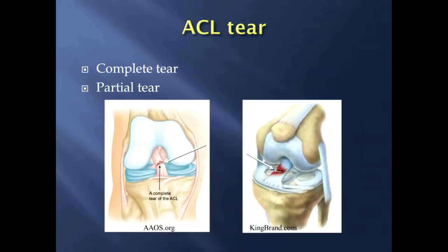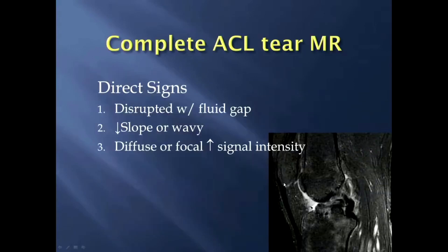The most common injury to occur to the ACL is a tear, and those are broken up into two main categories: the complete tear — the more devastating one that requires surgery — and a partial tear. Here's an example of a complete tear of the ACL, and here's another image showing a partial ACL tear.